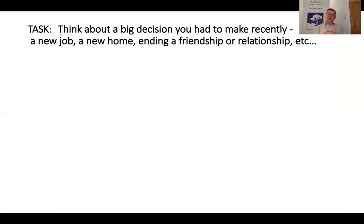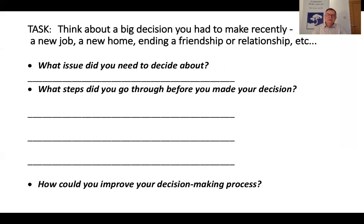How do we actually go about encouraging and practicing this? Have a look at this task: think about a big decision you had to make recently — a new job, a new home, ending a friendship or a relationship. This task can be done in twos and threes; it's really a discussion. Here are guidelines for a structured discussion: What issue did you need to decide about? What steps did you go through before you made your decision? How could you improve your decision-making process? We can come up with many tasks like this that make students aware of their own thinking processes.